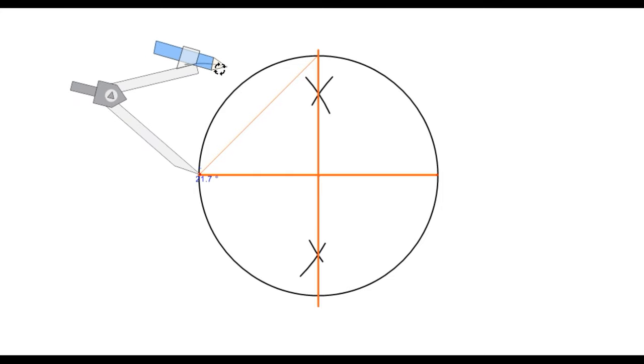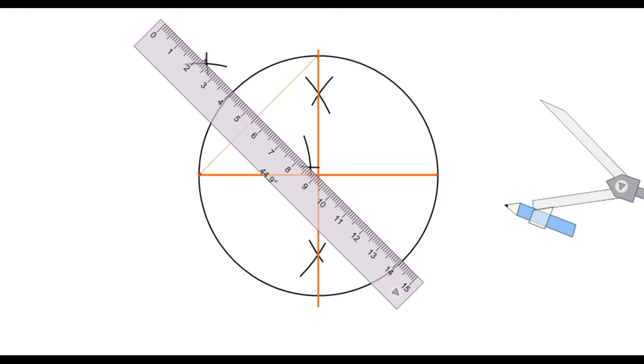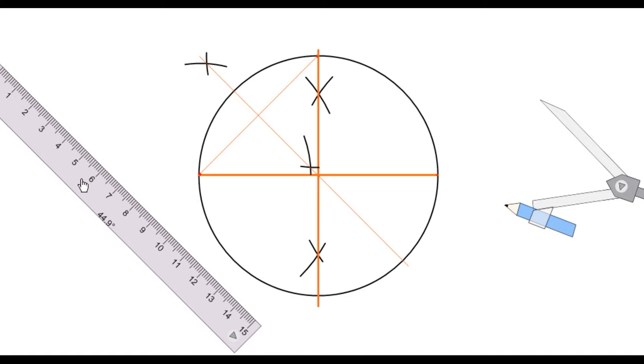Draw an arc above and below the line from this point. Similarly, draw an arc above and below the line from the second point. We'll connect these two points at the intersection of the arcs to get the perpendicular bisector.